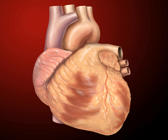The right ventricle tapers into the pulmonary trunk, into which it ejects blood when contracting. The pulmonary trunk branches into the left and right pulmonary arteries that carry the blood to each lung. The pulmonary valve lies between the right heart and the pulmonary trunk.